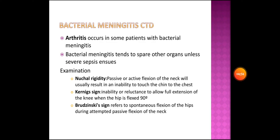On examination, nuchal rigidity refers to passive or active flexion of the neck resulting in an inability to touch the chin to the chest. Kernig's sign refers to inability or reluctance to allow full extension of the knee when the hip is flexed 90 degrees. Brudzinski's sign refers to spontaneous flexion of the hips during attempted passive flexion of the neck.